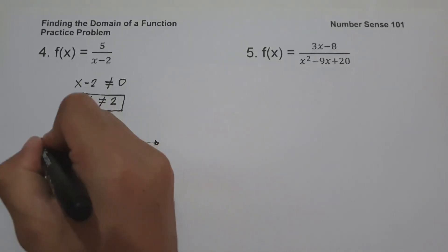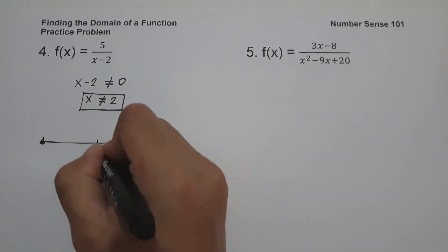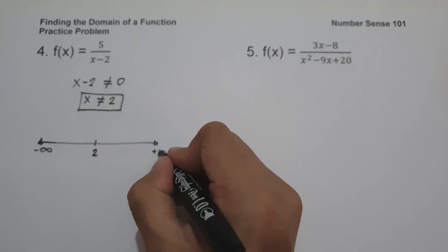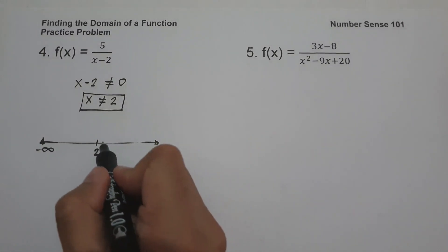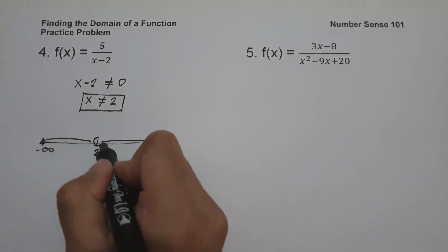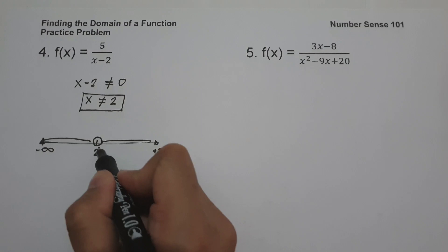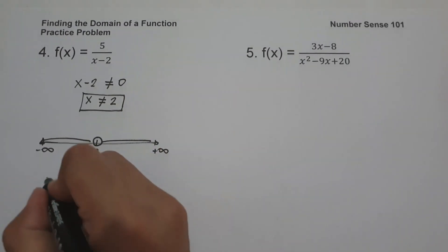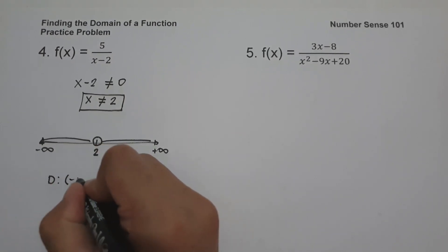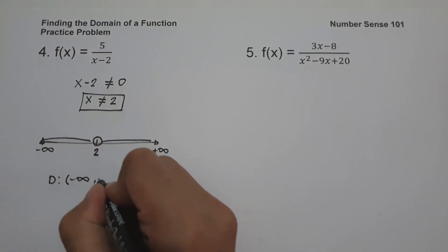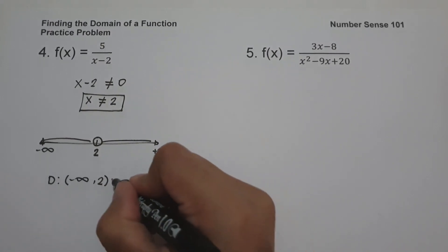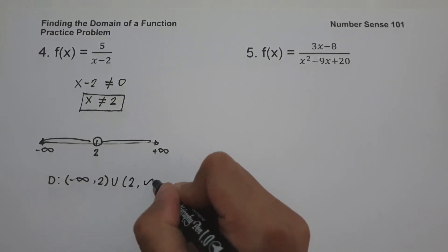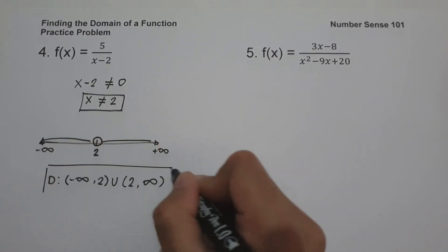If you draw a number line, positive 2 is the excluded point with negative infinity to the left and positive infinity to the right. We use an open circle because 2 is not included. The domain in interval notation is from negative infinity up to 2, union 2 up to positive infinity, and this is our answer.